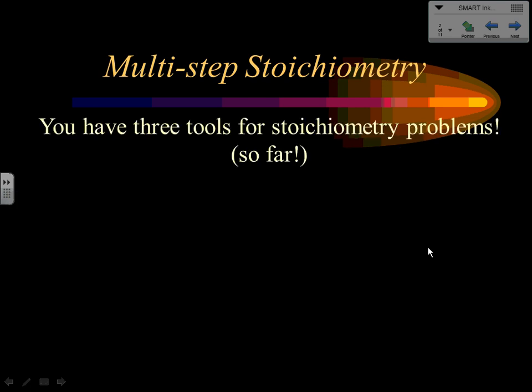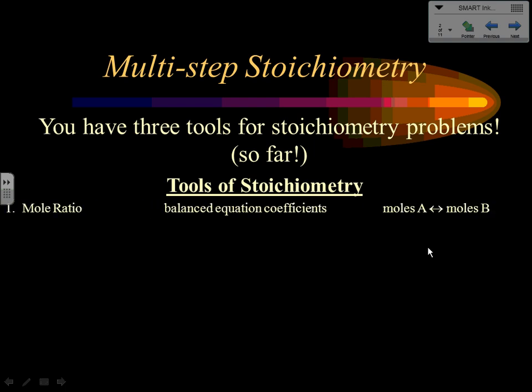There are three fundamental tools of stoichiometry. First is mole ratio — it uses the balanced equation coefficients and allows us to go from moles of one substance to moles of another. Second is molar mass, where the mass from the periodic table in grams equals one mole. This allows us to convert back and forth between mass and moles of the same substance.